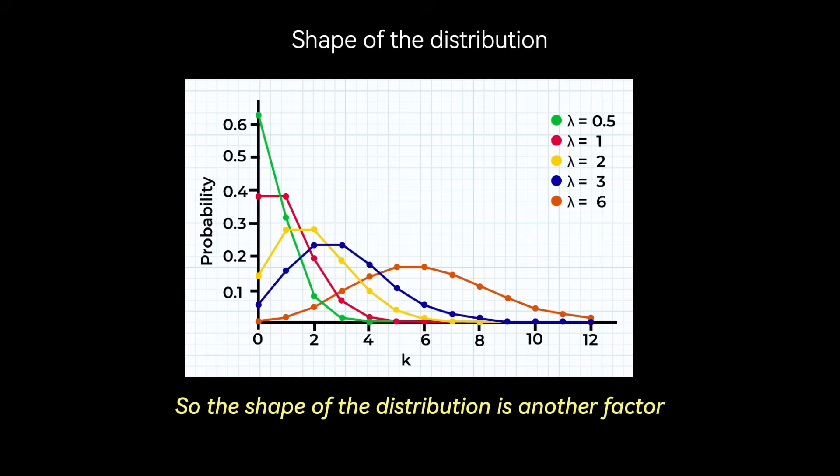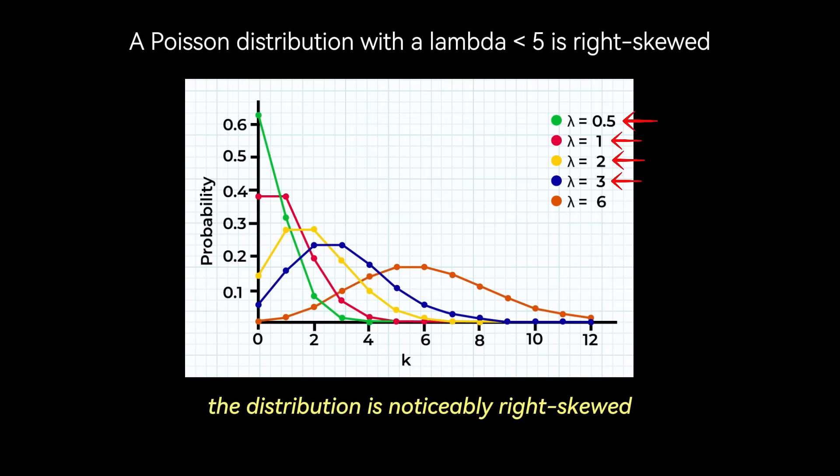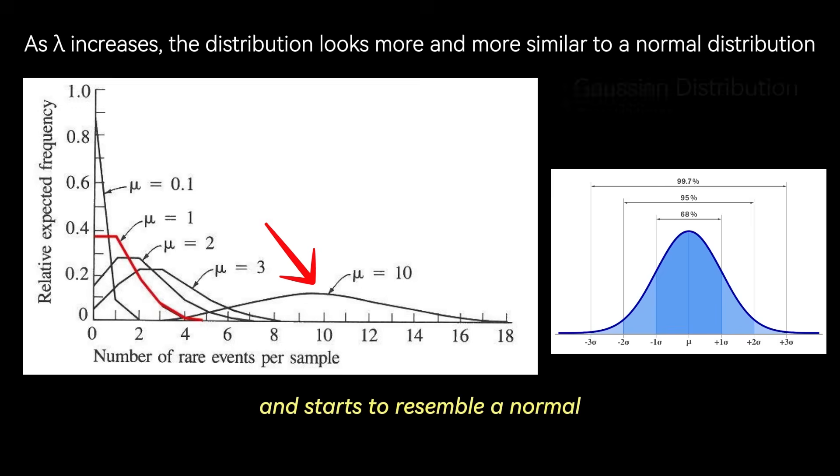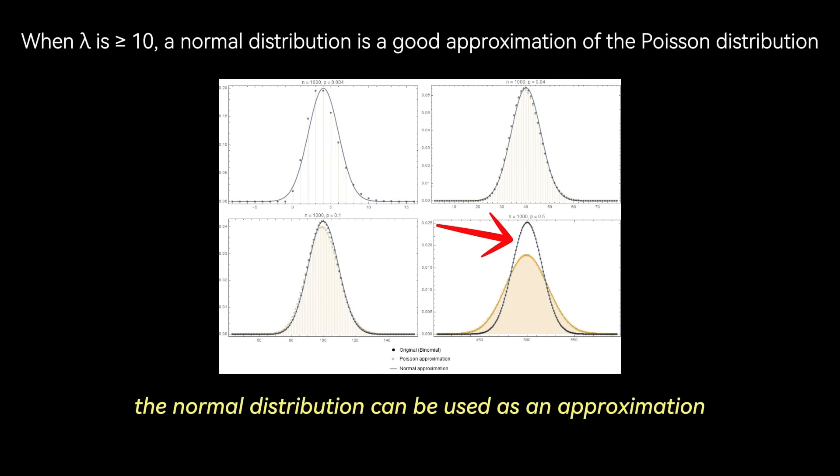So the shape of the distribution is another factor. For small values lambda, for example lambda less than 5, the distribution is noticeably right skewed. What that means is it has a longer tail on the right side. This makes sense. If the average is low, you can't have fewer than zero events, but you could occasionally have more than average. As lambda increases, for example lambda greater or equal to 10 or 20, the distribution becomes more symmetrical and starts to resemble a normal or Gaussian distribution. In fact, for large lambda, the normal distribution can be used as an approximation to the Poisson distribution.